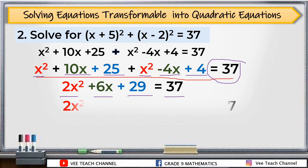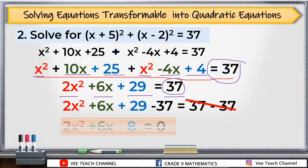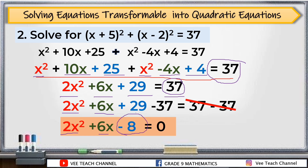Is this the final answer? No — we need to make our equation equal to 0. Apply the addition property of equality: subtract 37 from both sides. Bring down 2x squared plus 6x, and simplify 29 minus 37, which equals negative 8. Our equation is now equal to 0.